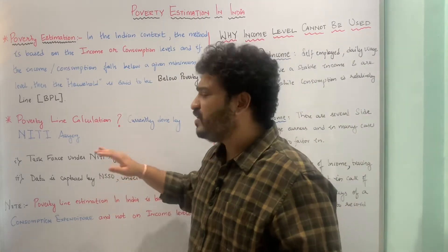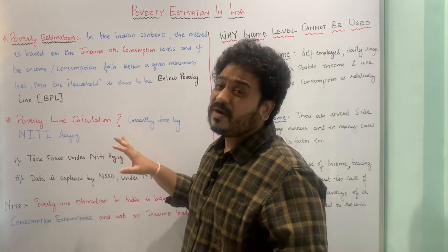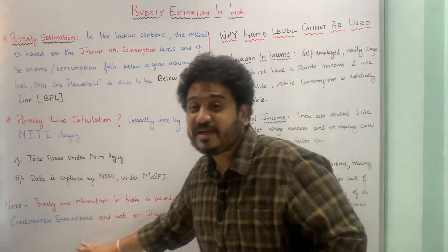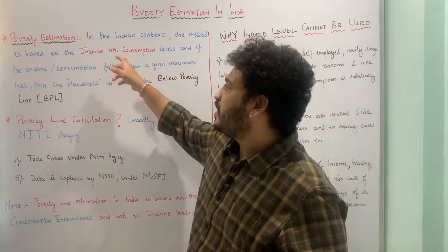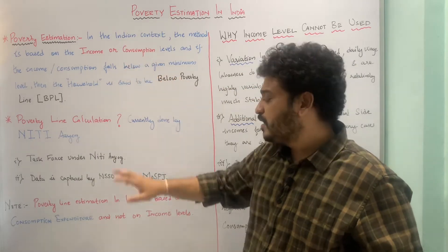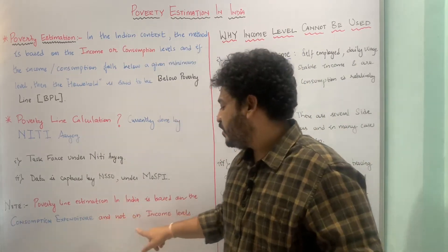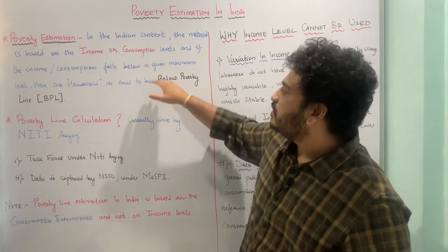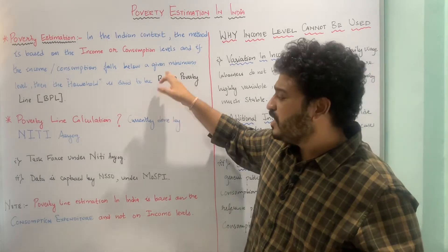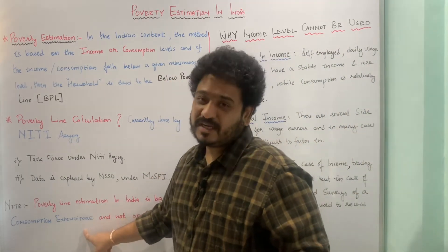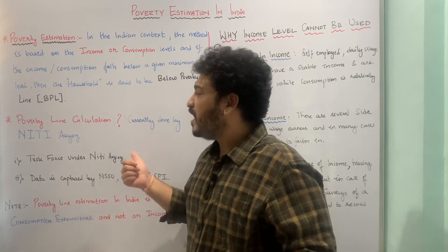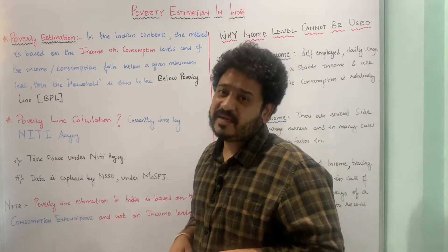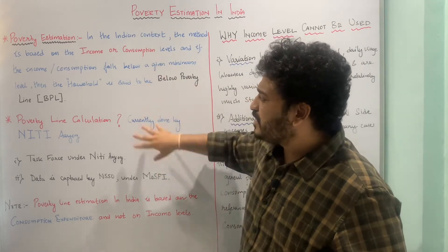A note of caution: poverty line calculation in the Indian context is based on consumption expenditure, not on income levels. It is the consumption expenditure which is looked at to arrive at below-poverty-line estimates in the Indian context. Income levels are not the primary measure used for poverty estimation in India.